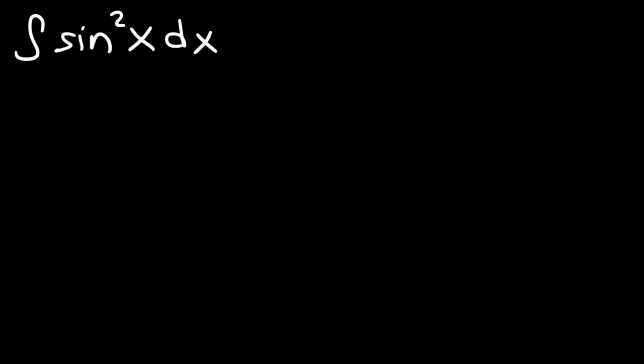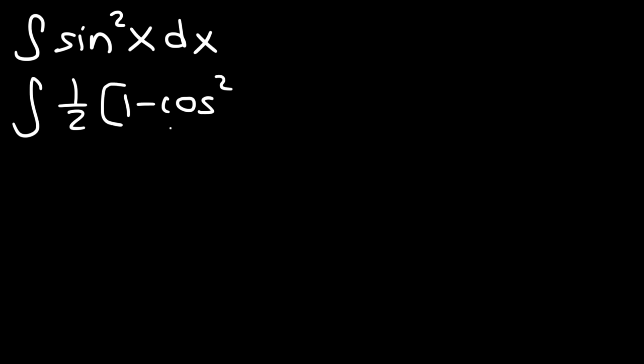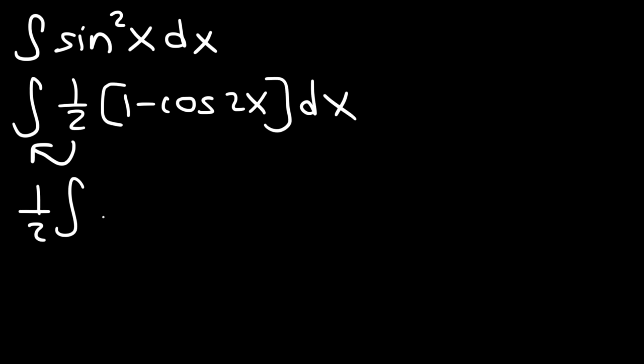There's no point replacing sine squared with 1 minus cosine squared — it won't help us. In this particular problem, we can't really use u substitution, so we have to do something different. This is where you need to know your trig identities, particularly the half angle identity. You need to know that sine squared is 1/2 times (1 minus cosine 2x). So we can replace sine squared with that, and move the 1/2 to the front.